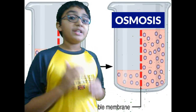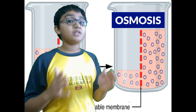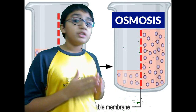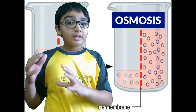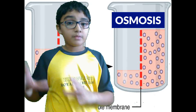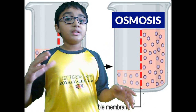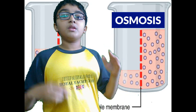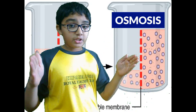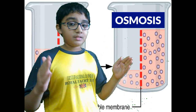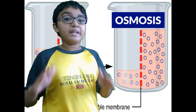Now, diffusion. Diffusion is the same thing as osmosis. In fact, you can categorize osmosis as a type of diffusion. Diffusion is the same thing but it moves a gas from a higher concentration of that gas to a lower concentration of that gas, and there is no permeable membrane involved.